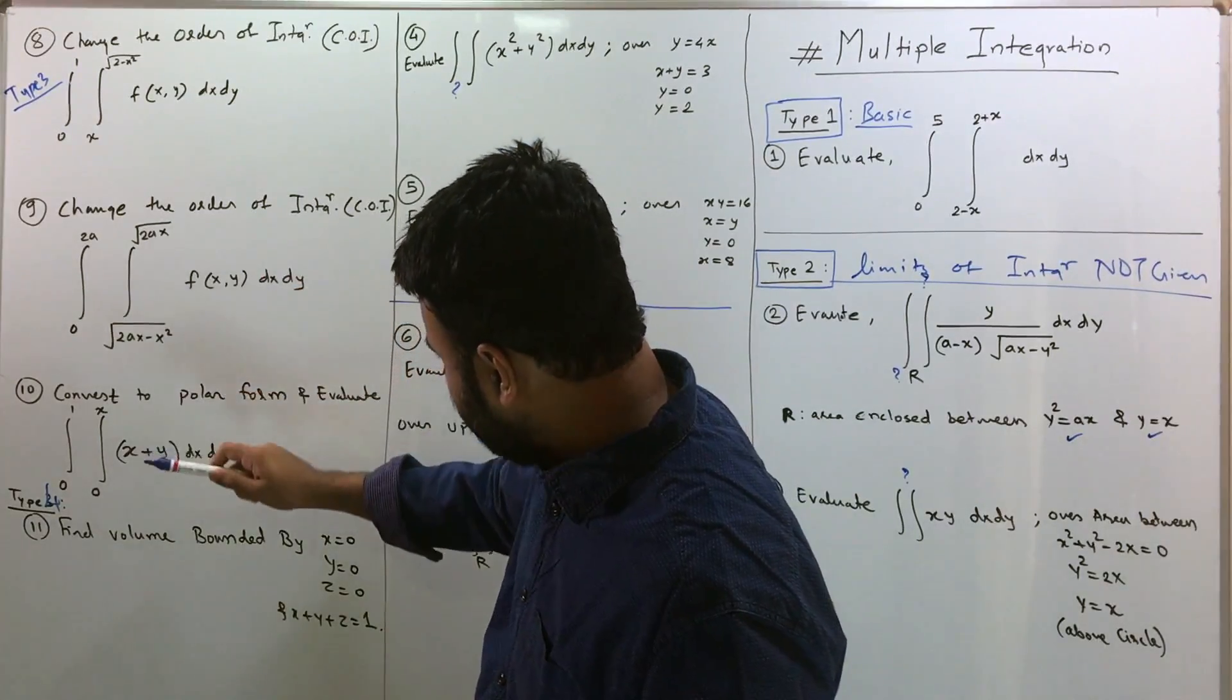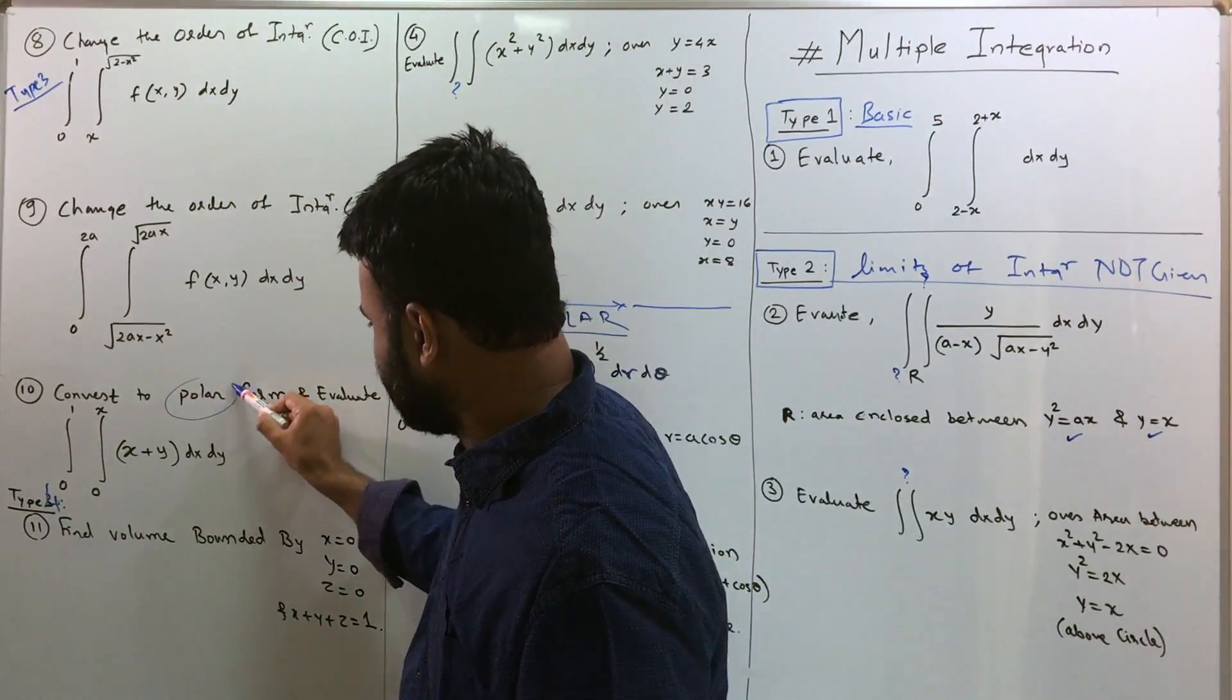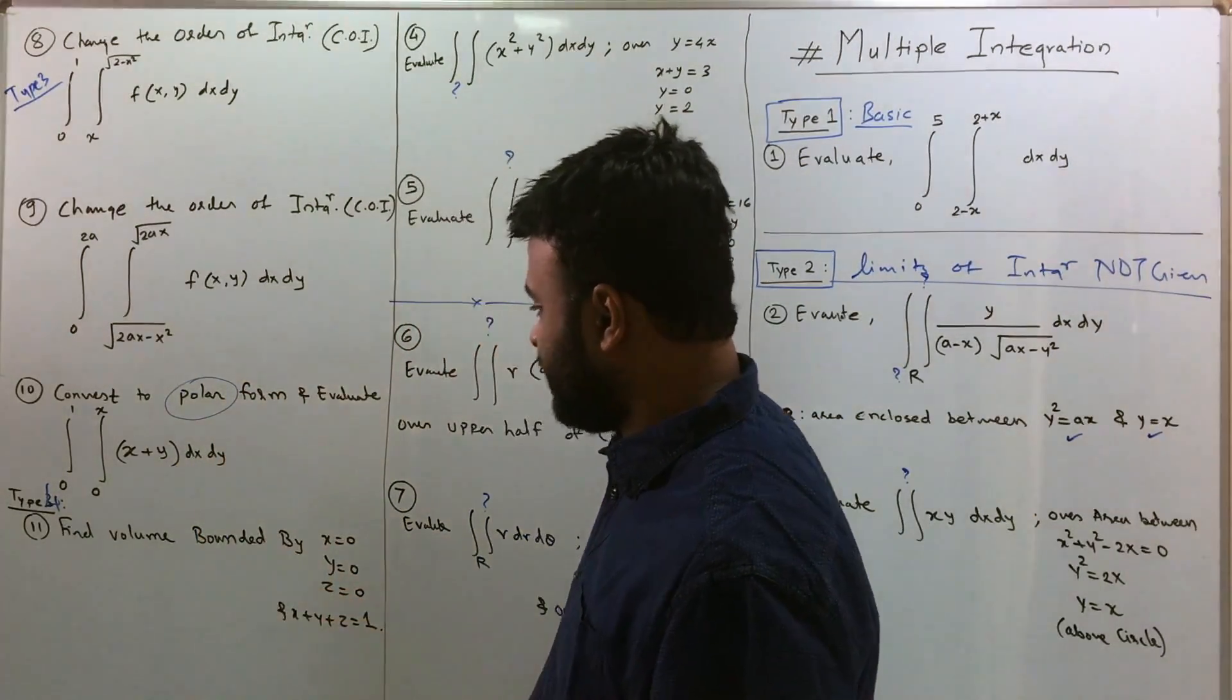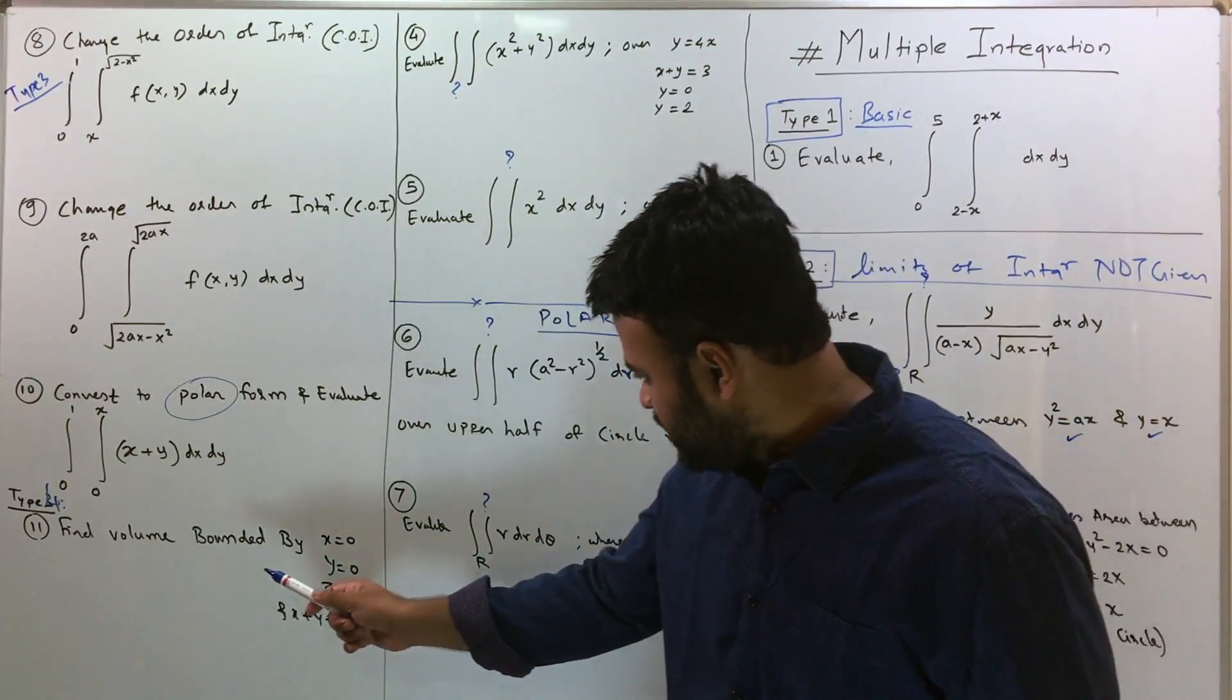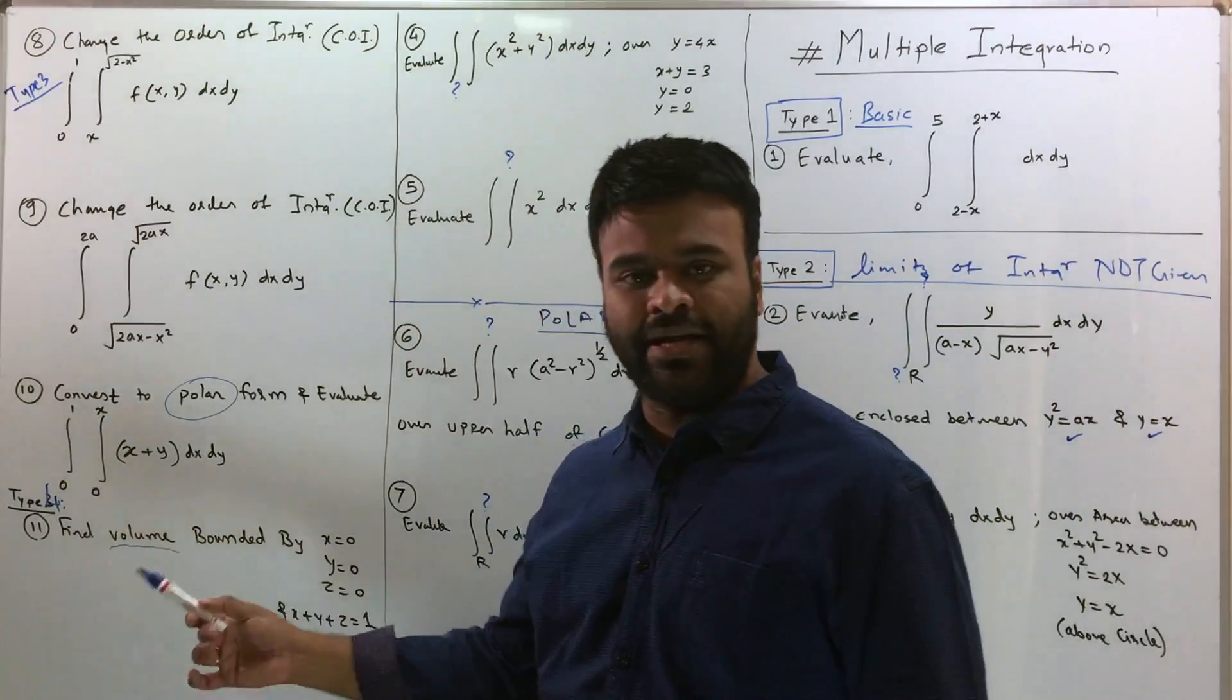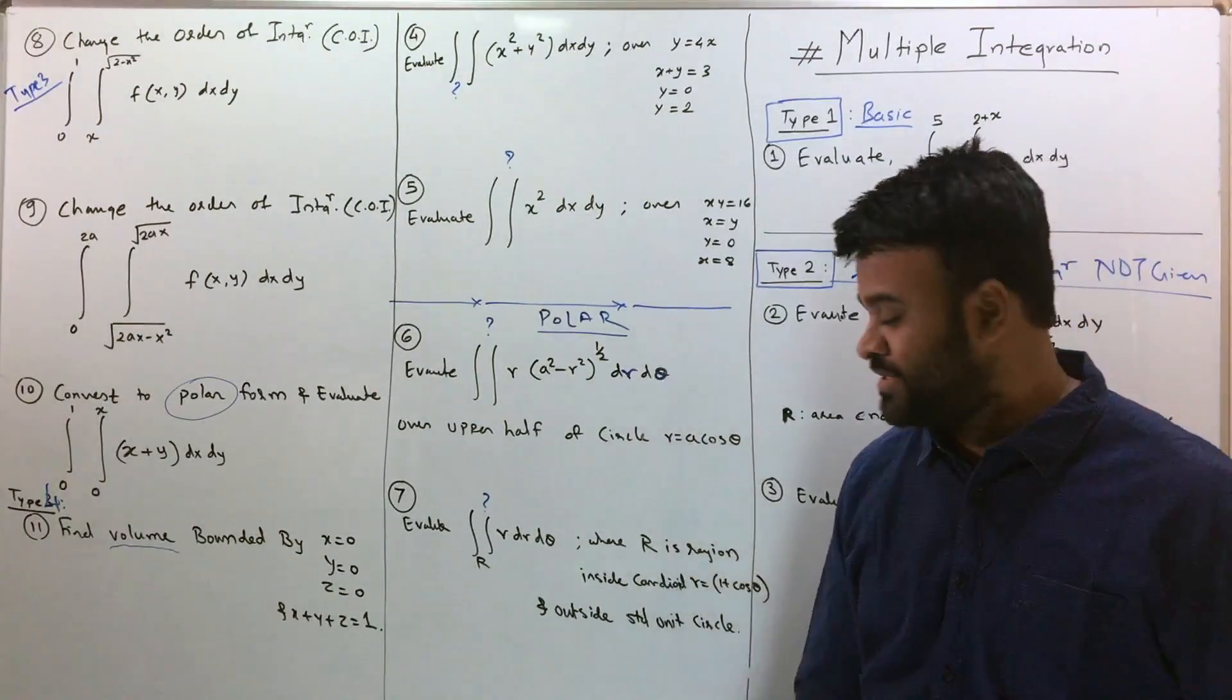Then question number 10 is not really flip, basically we convert to polar forms. So right now this is an xy or the rectangular form, you have to convert that into polar form. So that's the 10th question and 11th question is going to be, do you see a volume? So this volume is typically a triple integration question. So 11th question is of the typical of the triple integration.